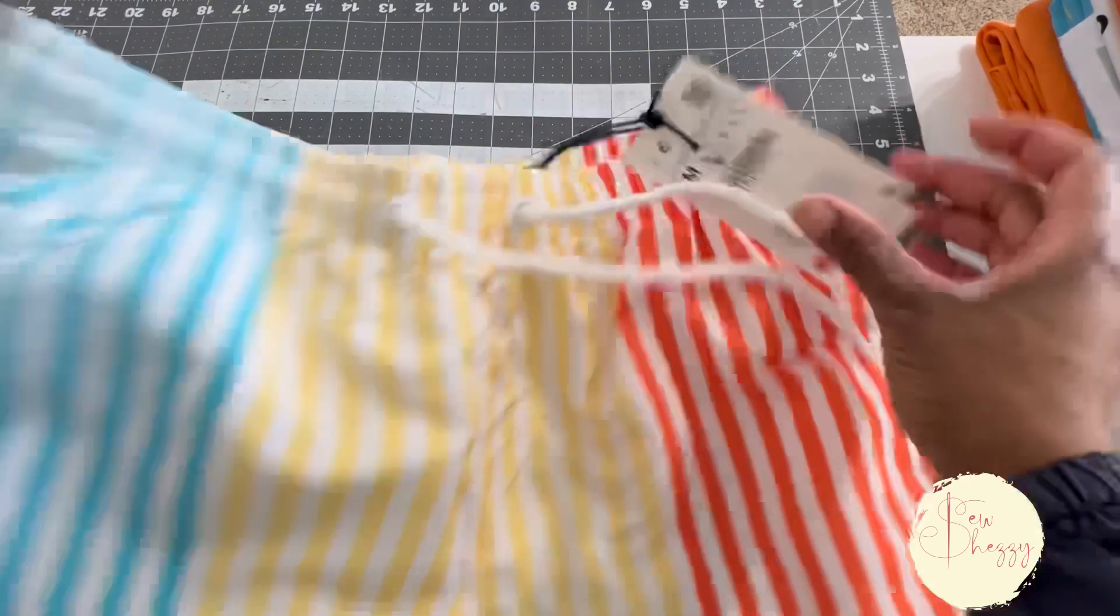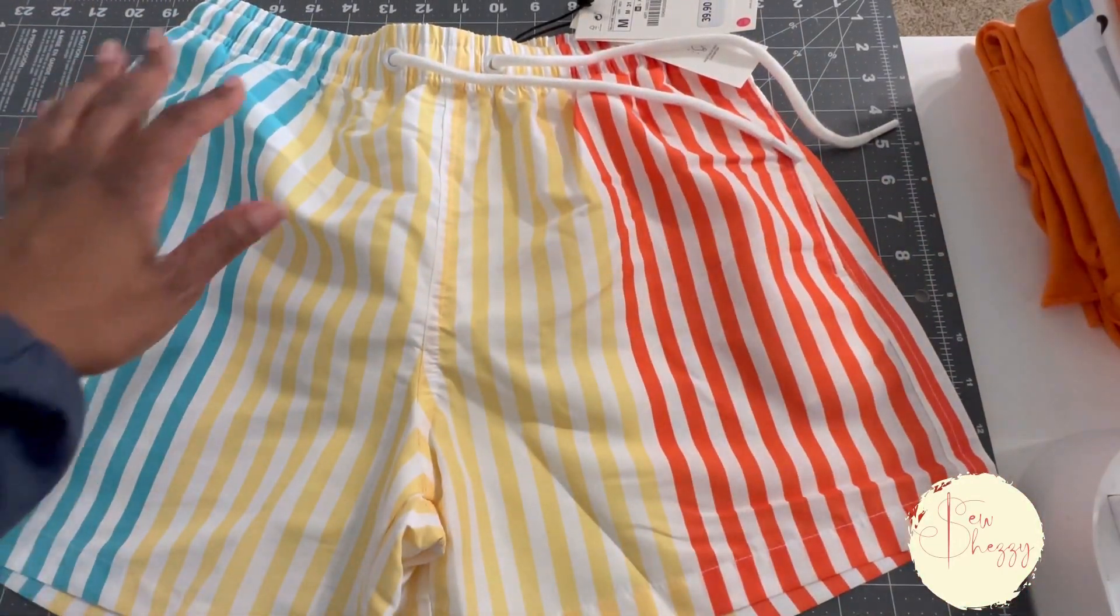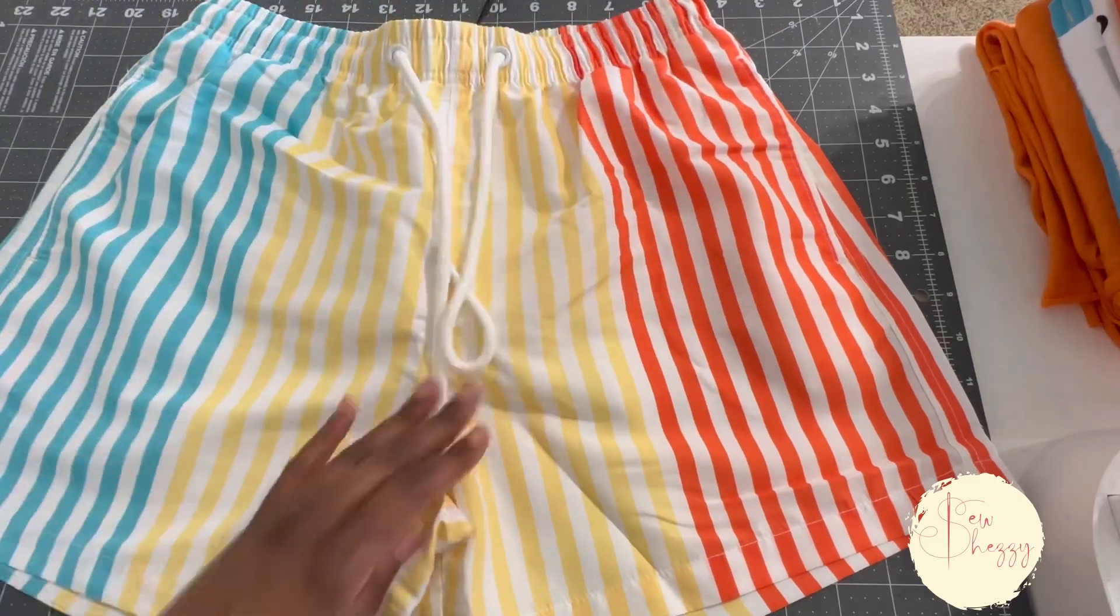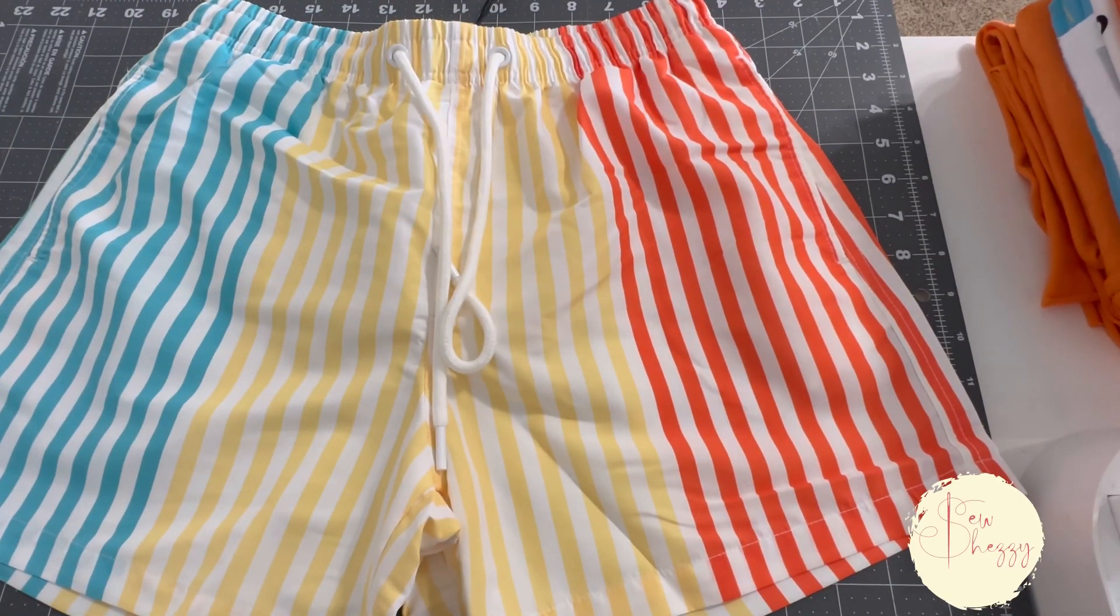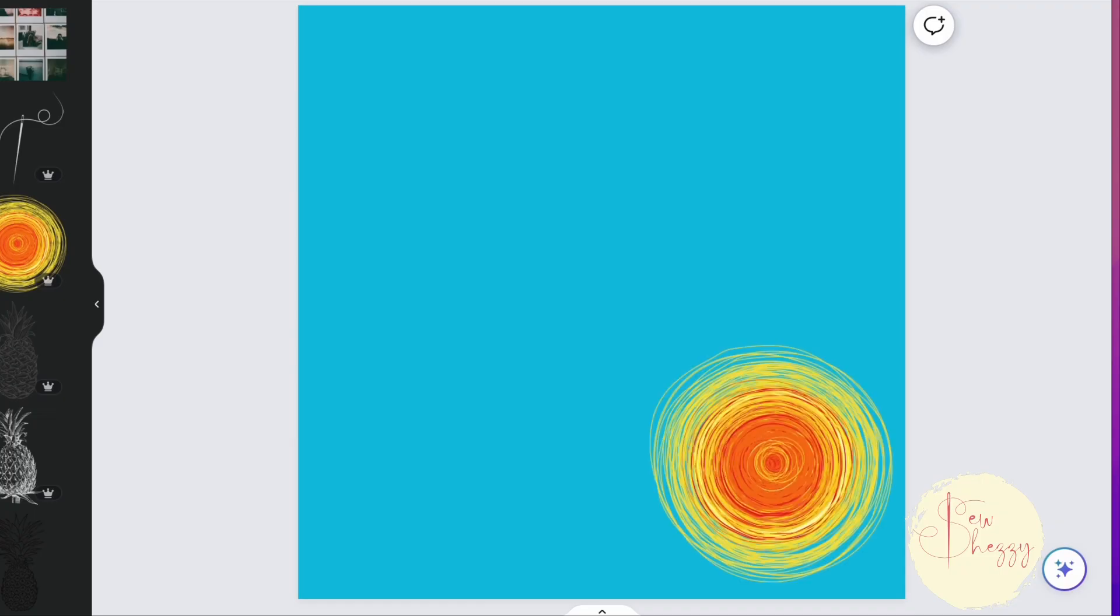So I decided to sew about 95% of their vacation wardrobe. I always start my planning with buying a few items that I love. These trunks were on Zara and I love the colors. It reminded me of a beautiful summer day, so I knew I wanted to do something that also gave that vibe.